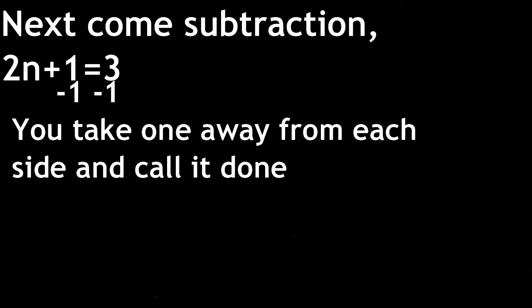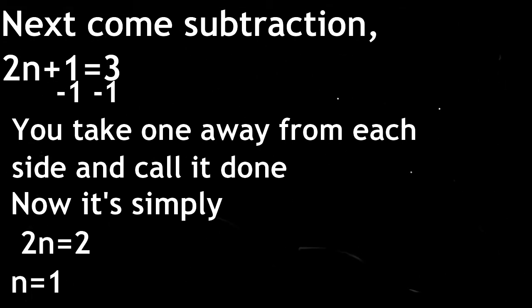2n plus 1 equals 3. Just take one away from each side and call it done. Now it's simply 2n equals 2. Where you divide once again or else you haven't had a clue.